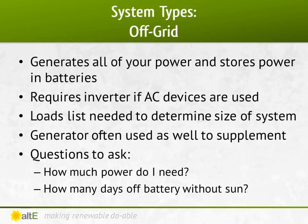Unlike a grid-tied system where you can just base a system on how much power you want to offset, an off-grid system needs to provide all of your power. You need to look at what you are powering and how long you need to power it. Going off-grid often takes changes to your lifestyle. It's not as simple as saying, I'm tired of paying the electric company, I'm taking the whole house off-grid. You have to figure worst-case scenarios — wintertime with little to no sun for days. Unless you are in a climate that has long, sunny days all year round, most people doing a year-round off-grid system will have a generator available to pitch in for the winter.